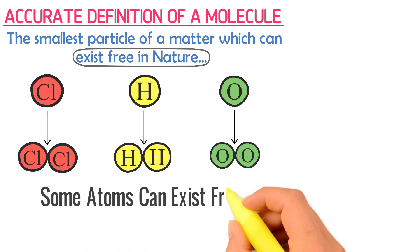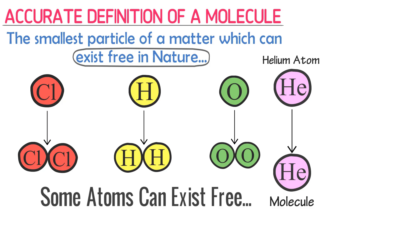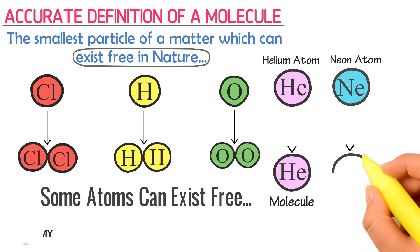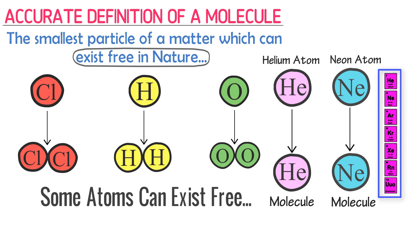Remember that there are some atoms which can exist freely in nature. For example, a helium atom can exist freely or independently in nature — thus it is also a molecule. A neon atom can also exist freely in nature — thus it is also a molecule. Note that all group 8 elements like neon, helium, and krypton are atoms as well as molecules, because they exist independently in nature.